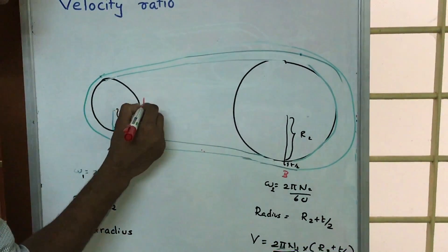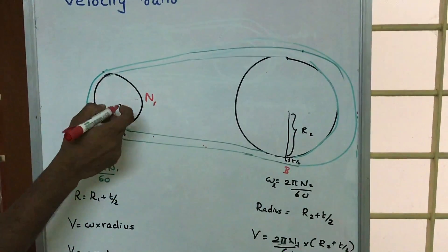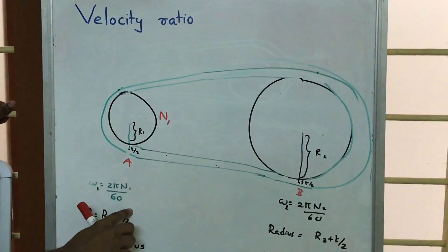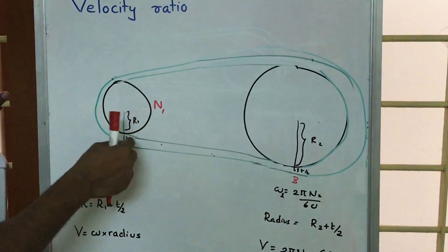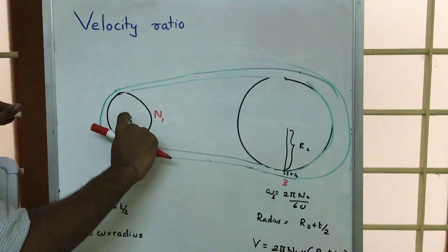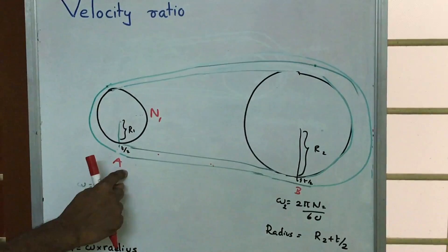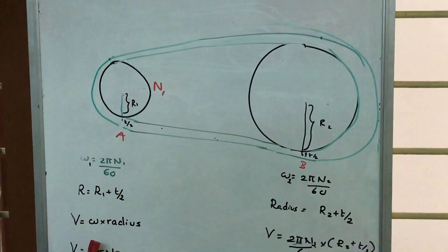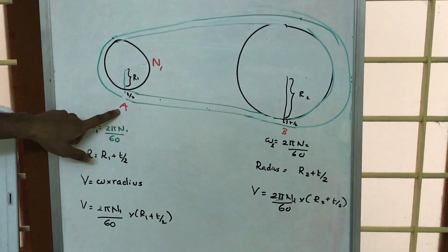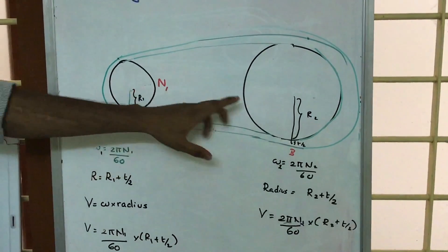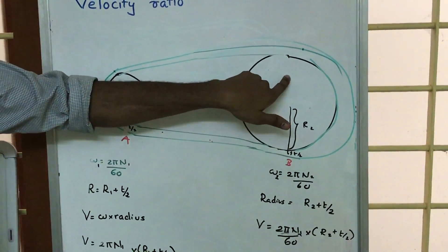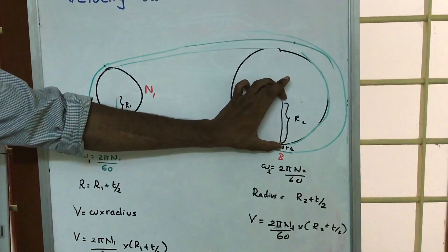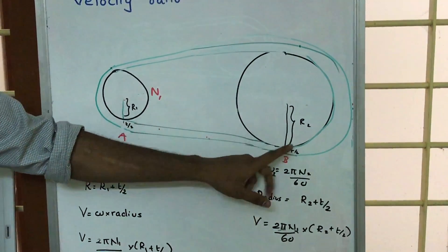To find the velocity at A and B and equate them: if the driving pulley has RPM n1, its angular velocity is omega1 = 2π·n1/60. Multiplying omega1 by the distance from the pulley center to the belt center, which is r1 + t/2, gives us the velocity at point A. Similarly, omega2 = 2π·n2/60 for the driven pulley.